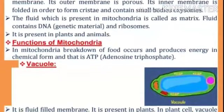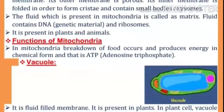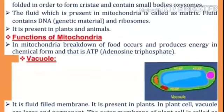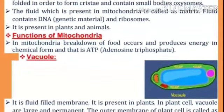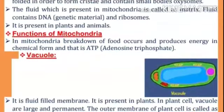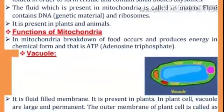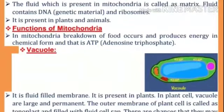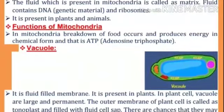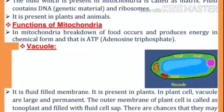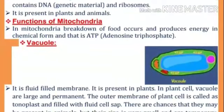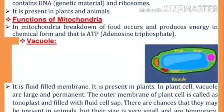Mitochondria is present in both plants and animals. Functions of mitochondria: In mitochondria, breakdown of food occurs and produces energy in chemical form, which is ATP — adenosine triphosphate.